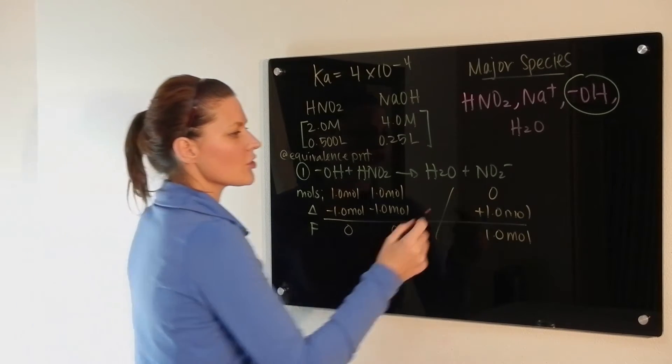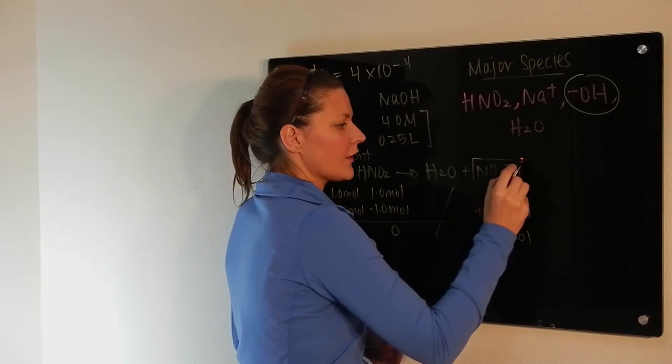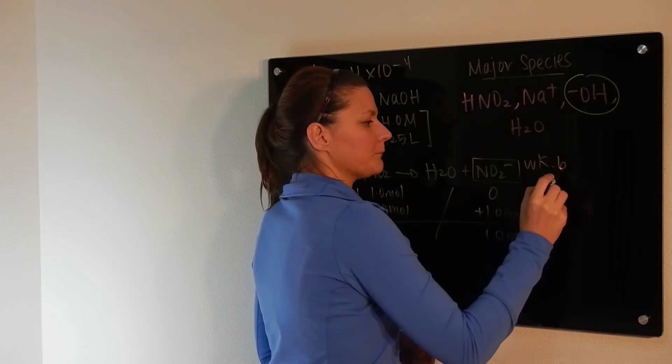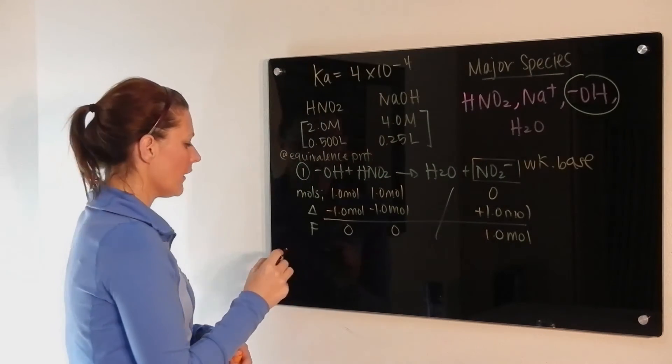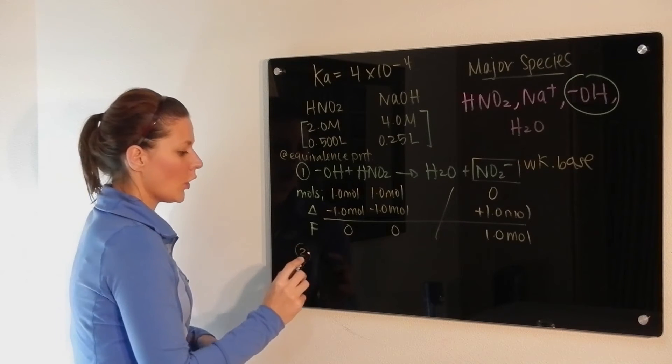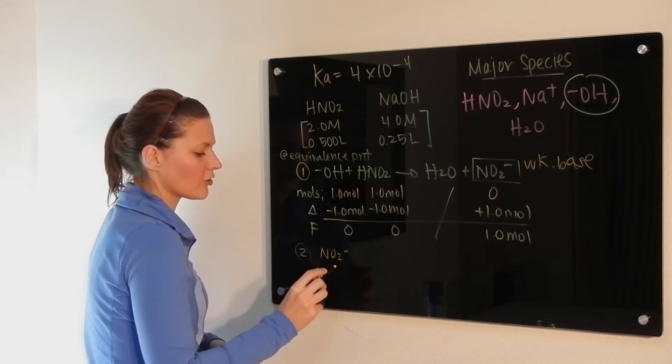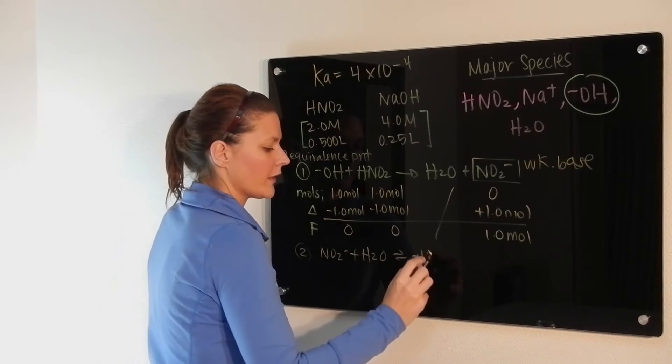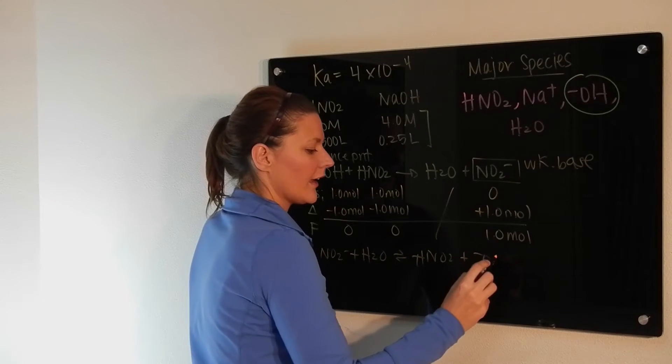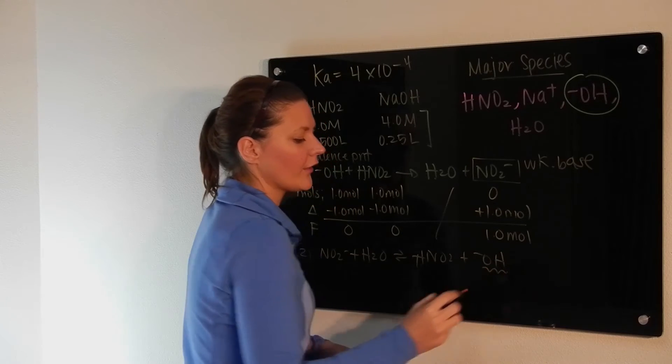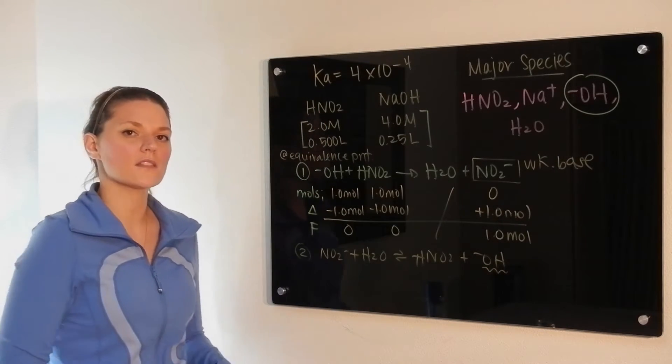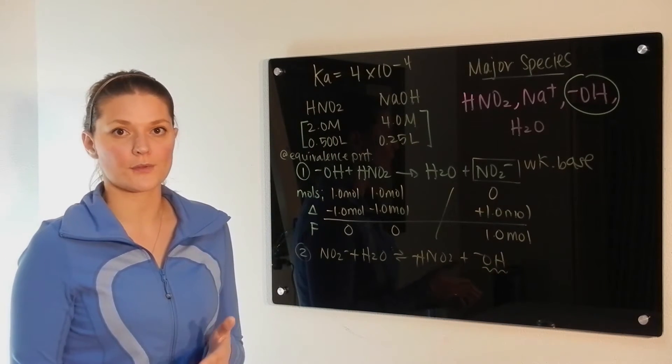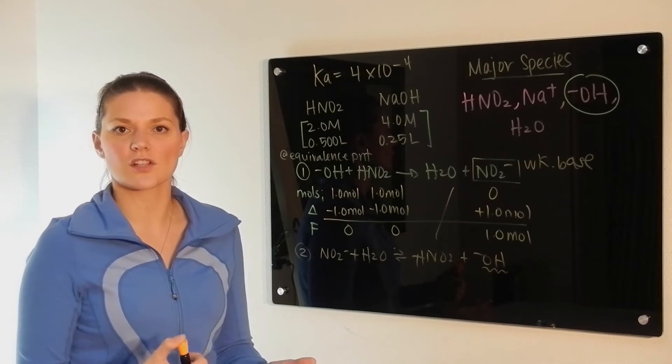So what we need to do is recognize that this substance here is a weak base. And because of that property, we have phase 2, which is the equilibrium reaction of the nitrite with water to form its conjugate and hydroxide. And there is what we're interested in. What is the concentration of hydroxide that it produces? Because we can use that to solve for the pH.